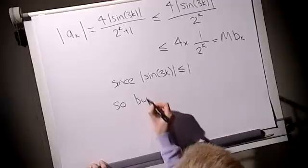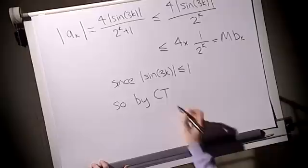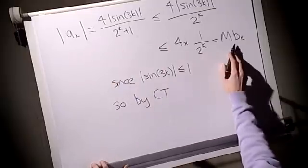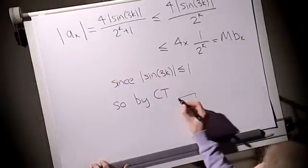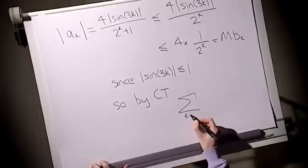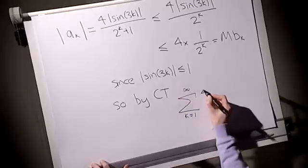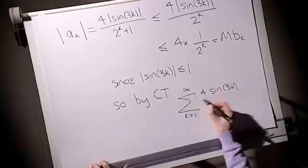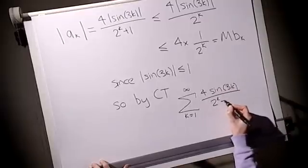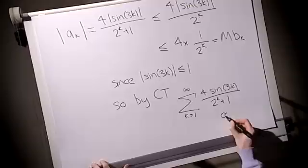So by the comparison test, we've shown that all the ak's are less than or equal to mbk's in modulus. So we can deduce that the ak's converge. So we've shown that the sum of 4 sine 3k all over 2k plus 1 converges.